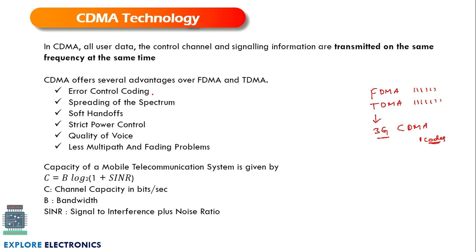The advantages of CDMA include easy error control coding, spreading of the spectrum, better utilization of bandwidth, soft handoff, strict power control mechanisms, improved voice quality, and less multipath fading problems. Capacity is the main aspect here — capacity is increased, measured in bits per second. The channel capacity C (bits per second) is given as C = B log₂(1 + SINR), where B is the bandwidth and SINR is the signal to interference plus noise ratio. This is how we calculate the capacity of the mobile telephone system in 3G.